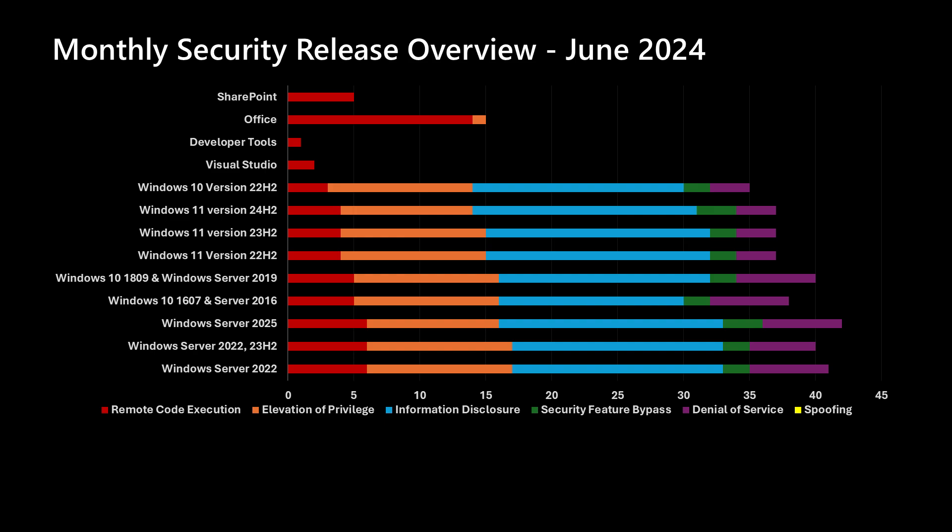Onto our overview chart — those of you who have watched this video before will recognize that we put Windows products towards the bottom, and as we move up the chart we get into products that are not necessarily serviced every single month with Windows. We've been averaging in the mid-to-low forties, and this month we're a little bit lower than the average, with between 35 and 42 CVEs addressed depending on the specific operating system. Moving up the chart, Visual Studio and developer tools have a small number of vulnerabilities being addressed this month. Office has a handful of vulnerabilities, and SharePoint has five vulnerabilities being addressed this month.